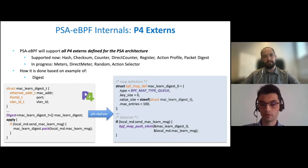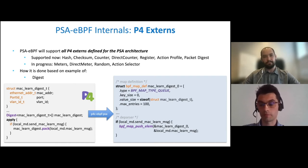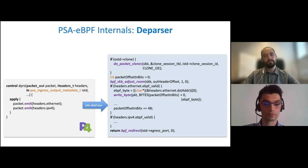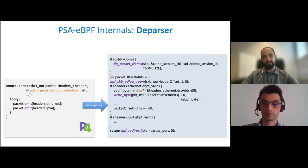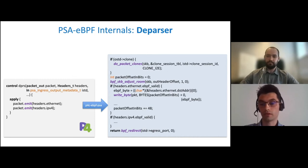Regarding P4 externs, all PSA externs are possible to implement in the BPF subsystem, and most are already implemented. To give an overview of how we design and implement P4 externs, we present the example of P4 digest. For each digest instance, there is a separate BPF map generated. The map type for digest is BPF_MAP_TYPE_QUEUE, which is a simple FIFO queue that makes sending data from kernel space to user space possible. If the pack method is invoked, the new element is pushed into the queue, and after that the user space application can read digest messages.